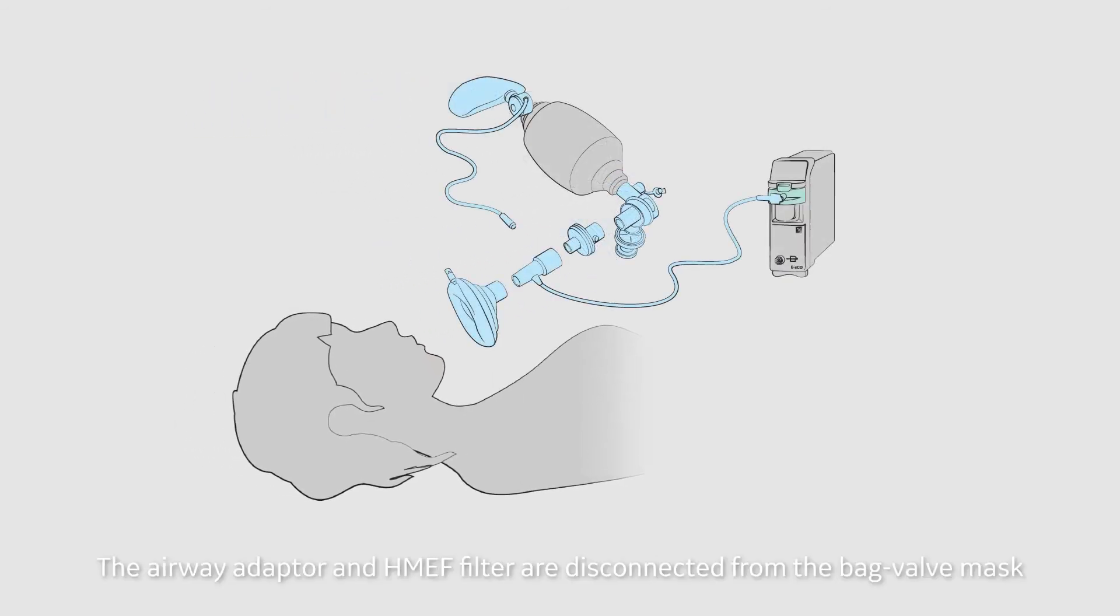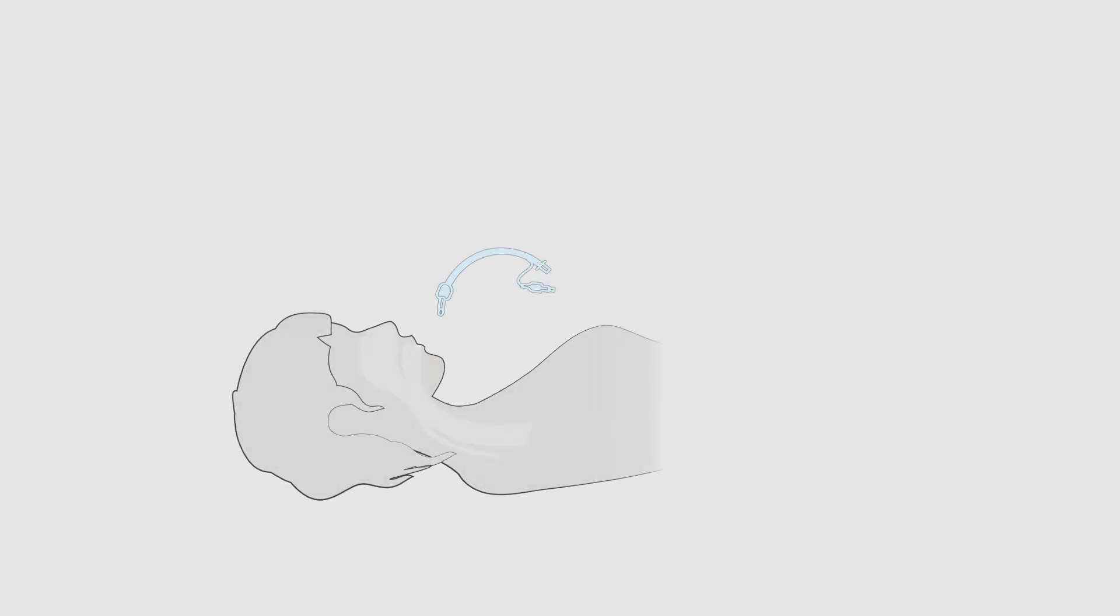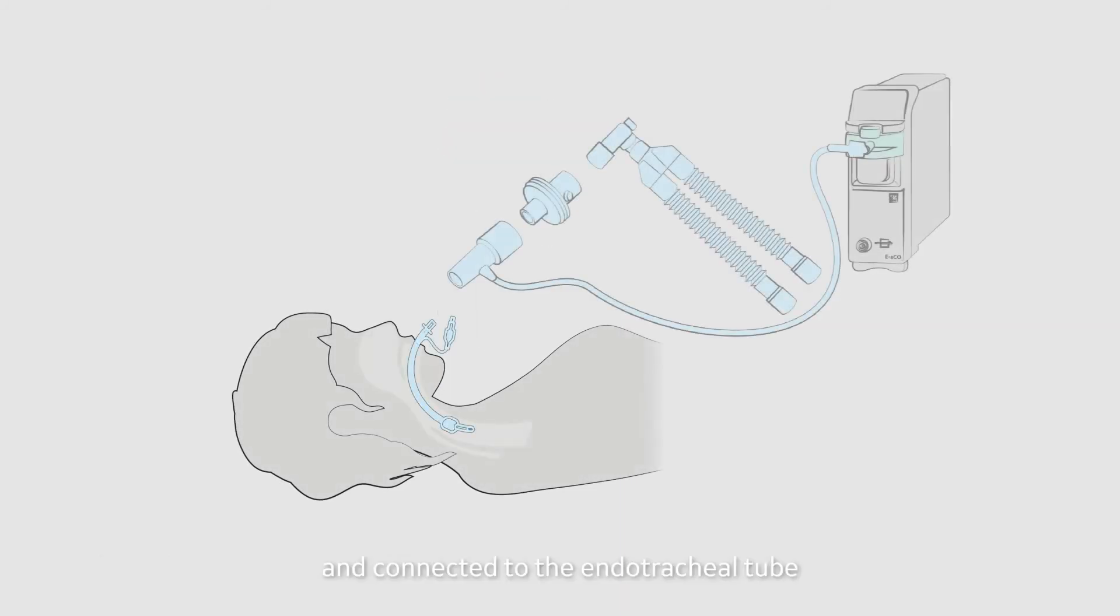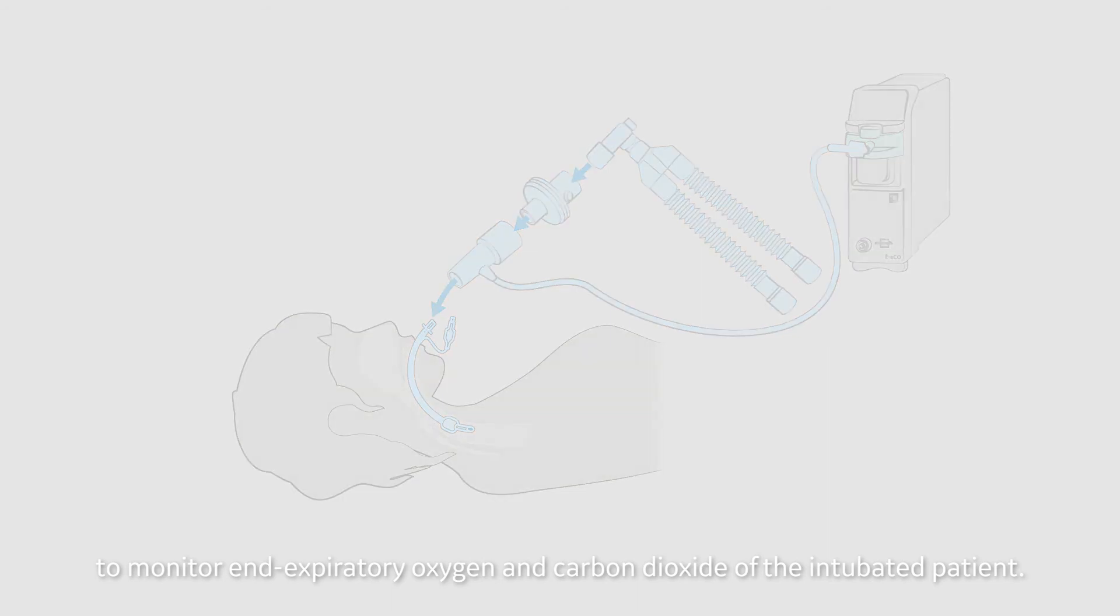The airway adapter and HMEF filter are disconnected from the bag valve mask and connected to the endotracheal tube and to the breathing circuit. Now the ESCO module can be used to monitor end-expiratory oxygen and carbon dioxide of the intubated patient.